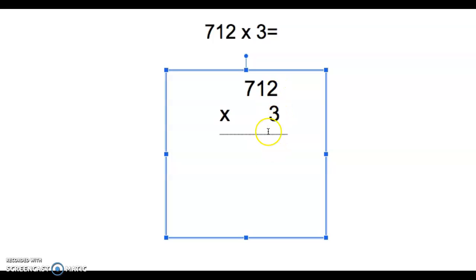So 3 times 2, we're gonna start there. 3 times 2 is 6. Then we're going to multiply the 3 times the 1 because it is in the tens place, so really we're saying 10 times 3 is 30. That's why we're gonna put it in the tens place. So 3 times 1 is 3.